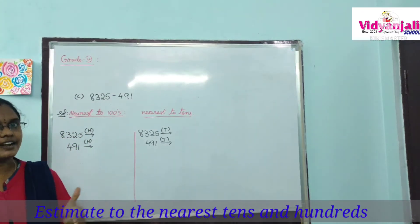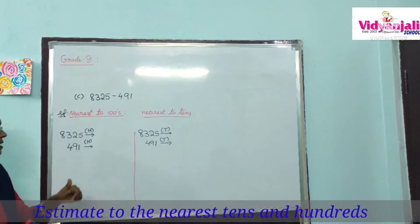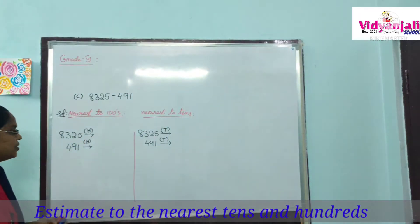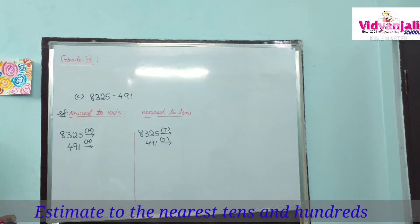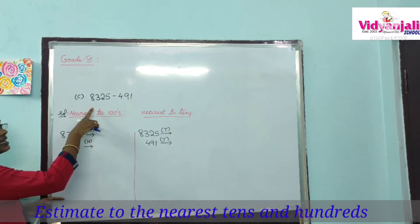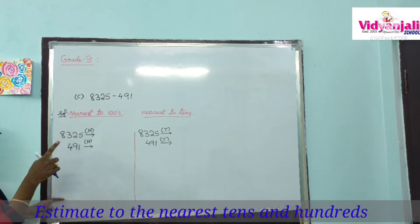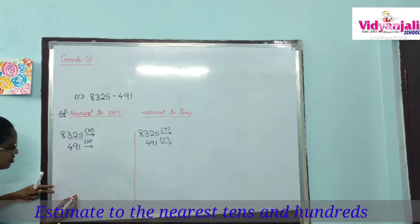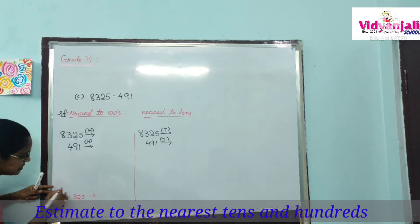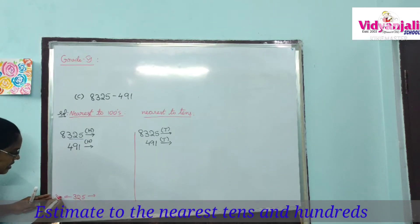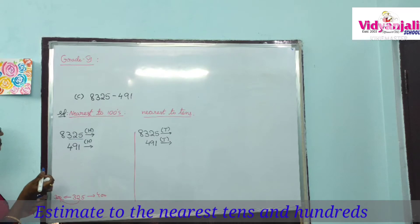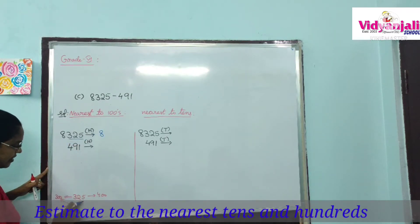So rough estimate means rounding off to the nearest hundreds, and closure estimate means rounding off to the nearest tens. The question is 8325 minus 491. For the rough estimate, round off to the nearest hundreds. The hundreds part of 8325 is 325. Now, 325 lies between 300 and 400. It is nearer to 300, so we replace 325 with 300. We write 8000 plus 300, giving 8300.